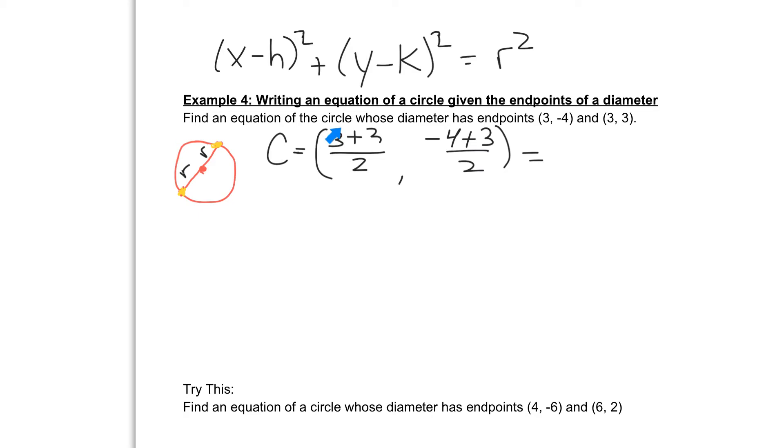If we take 3 plus 3, we get 6, and 6 divided by 2 would give us 3. So we know the x coordinate of our center is 3. And to find the y coordinate, -4 plus 3 is -1. Divided by 2 will leave us with that fraction, -1/2. And therefore this is our h, and this is our k.